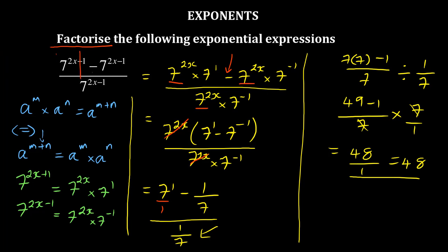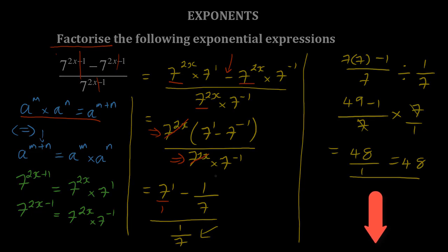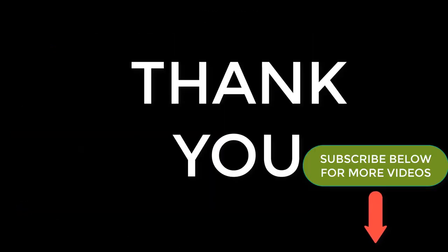So what you do first, you need to split them using this law. After splitting them, you factorize, and then you can cancel what is common, and then you can solve the numbers later.